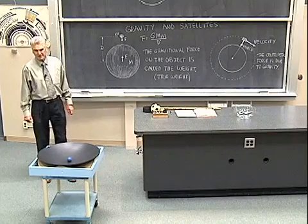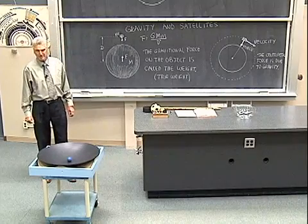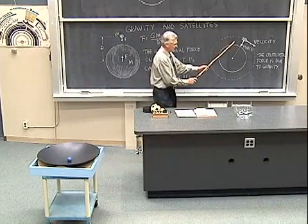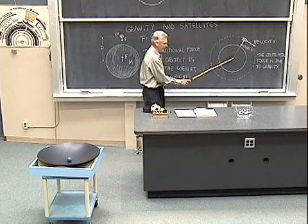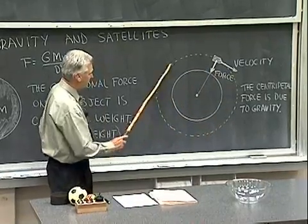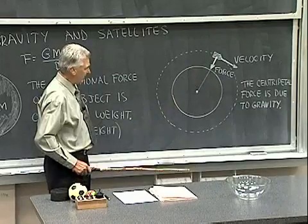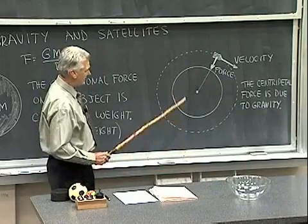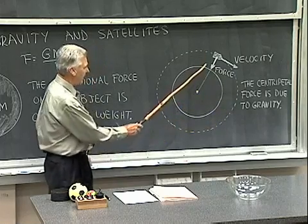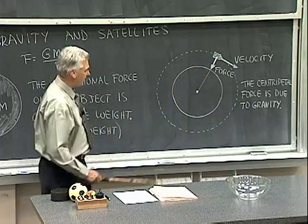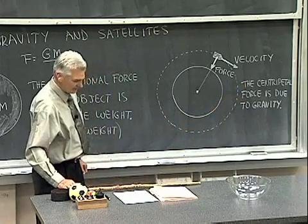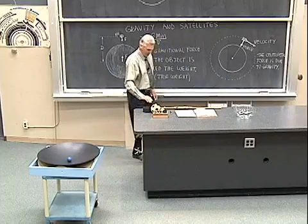I'm going to demonstrate satellite motion. With satellite motion we have, for example, a satellite orbiting a planet such as the earth, and the satellite is moving around in a circular path. The satellite has an inward force on it to keep it moving in that curved path, and that inward force is the gravitational force. The centripetal force is due to gravity on a satellite in orbit.